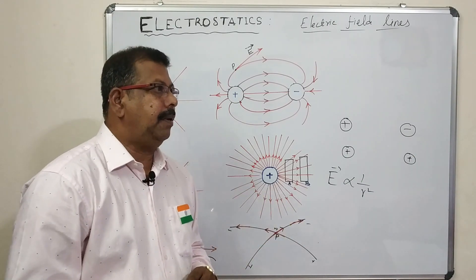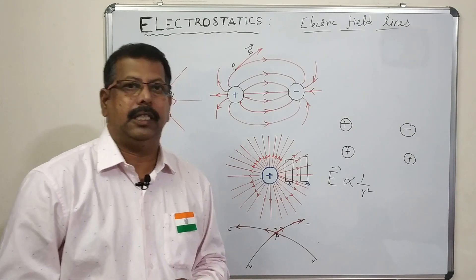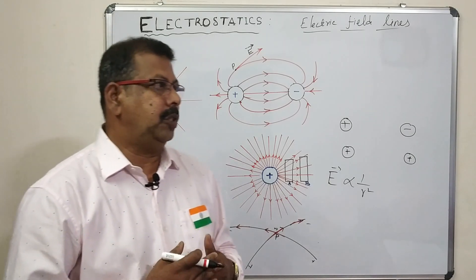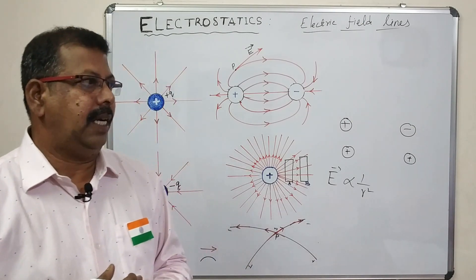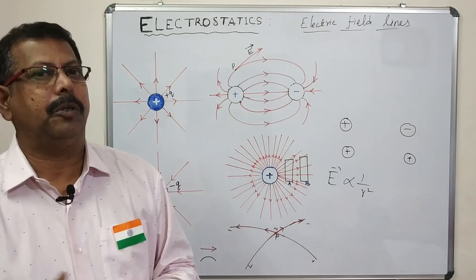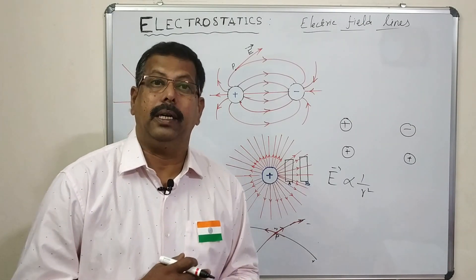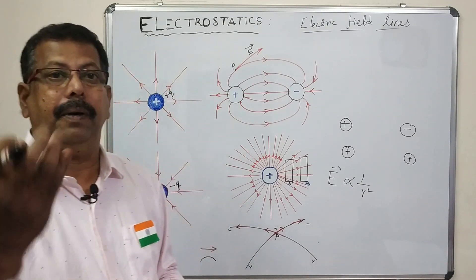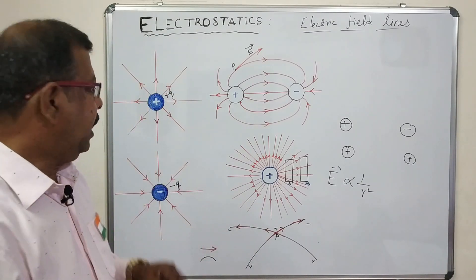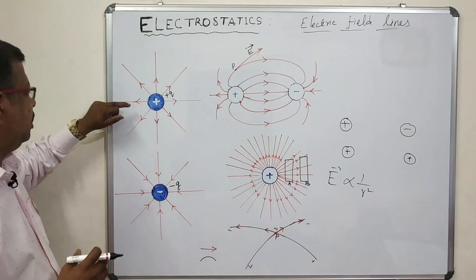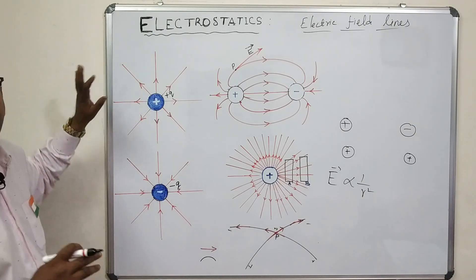The number of electric field lines emanating from a positive charge or terminating at a negative charge is directly proportional to the magnitude of the charge. This is the fifth point.